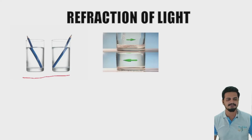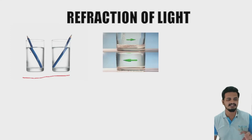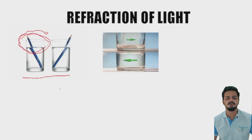To understand refraction of light, let's perform a simple experiment. Take a clear glass of water and place a pencil in it. You can see the pencil has changed shape — it appears curvy or displaced from its natural path. At the top of the glass there is air, and below there is water. The speed of light changes in different mediums, and this is key to understanding refraction.